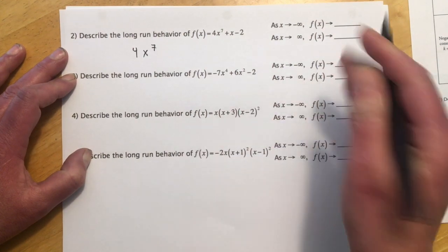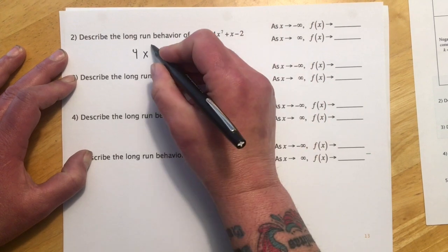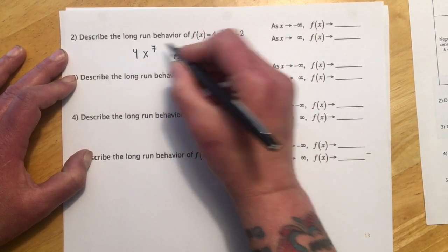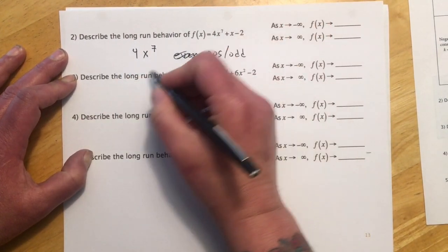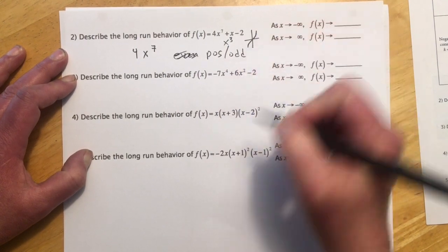So we look at this and our leading term is 4x to the seventh. So that's what's going to dictate what this thing does. And so this is positive and odd. And so positive odd things are like x cubed. And so that's going to look something like that.